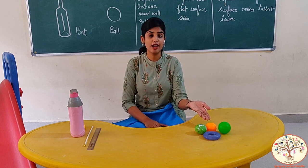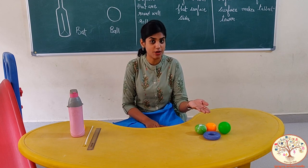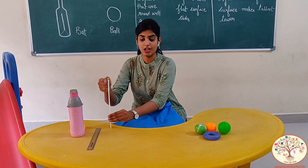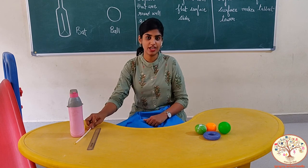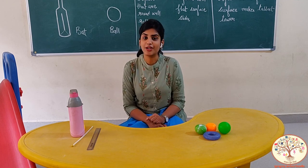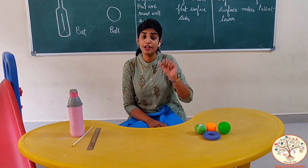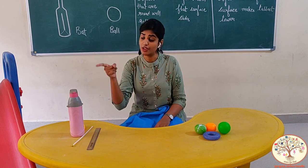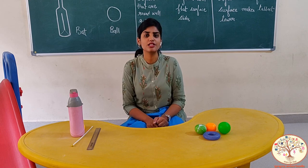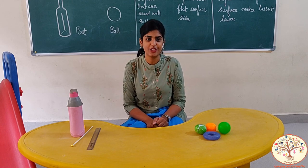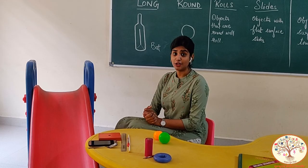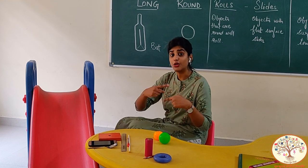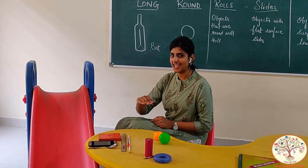So students, here are few things which are round and here are few things which are long. There is some work for you — look around your house and find out five round things and five long things. You can also draw their pictures in your notebook. Now students, we will see what rolls and what slides.